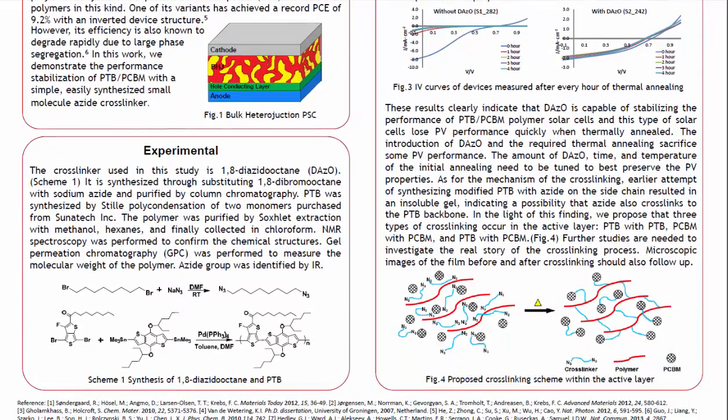These results clearly indicate that diazidooctane is capable of stabilizing the performance of PTB-PCBM polymer solar cells. These types of solar cells lose PV performance quickly when thermally annealed. The introduction of diazidooctane and the required thermal annealing sacrifice some PV performance, and the amount of diazidooctane and the time and temperature of the initial annealing need to be tuned to best preserve PV properties. As for the mechanism of crosslinking, an earlier attempt at synthesizing modified PTB with azide on the sidechain resulted in an insoluble gel, indicating a possibility that azide also crosslinks to the PTB backbone. In light of this finding, we propose that three types of crosslinking occur in the active layer: PTB with PTB, PCBM with PCBM, and PTB with PCBM. Further studies are needed to investigate the real mechanism of the crosslinking process.